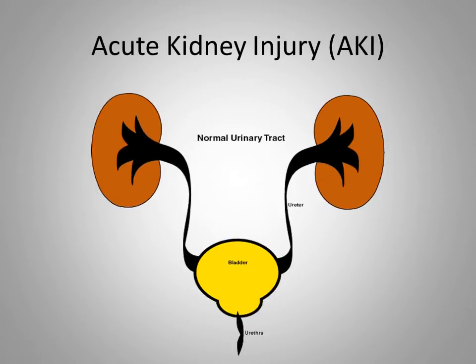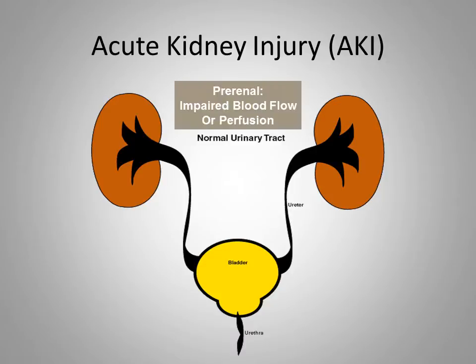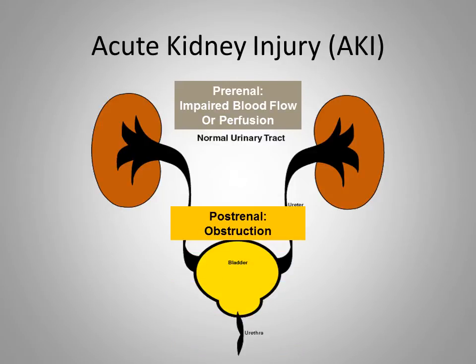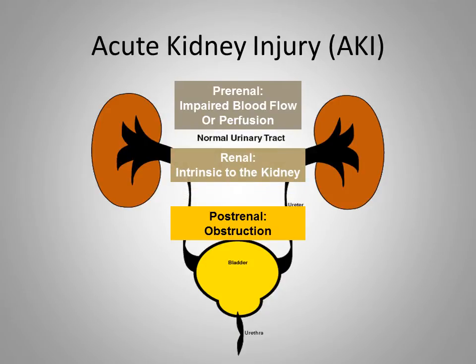We approach AKI by its anatomic site. Prerenal AKI is caused by impaired renal perfusion. Postrenal AKI is due to urinary obstruction. Damage within the kidney is intrinsic or renal AKI.